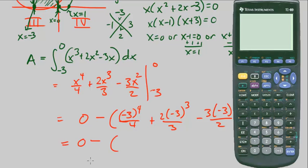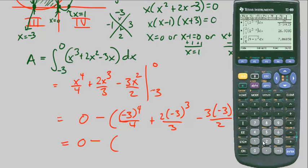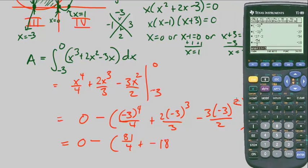Let's go ahead and simplify that. Negative 3 to the 4th, I'm just going to use my calculator. Negative 3 to the 4th is 81 over 4. It's positive 81 over 4 plus negative 3 cubed, so that's negative 27 times 2 divided by 3, that's negative 18. Finally, we have negative 3 squared, so that's 9 times 3, 27 over 2. So minus 27 over 2.